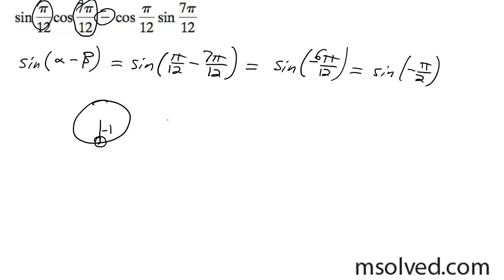So y over r in this case, so sine of negative pi over 2 is simply going to be equal to negative 1. We'll see you again.